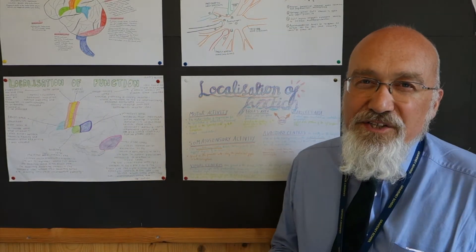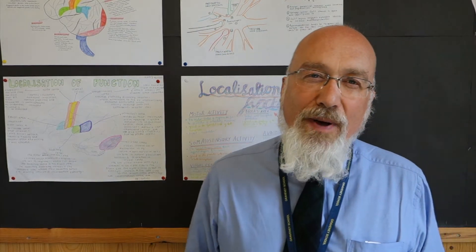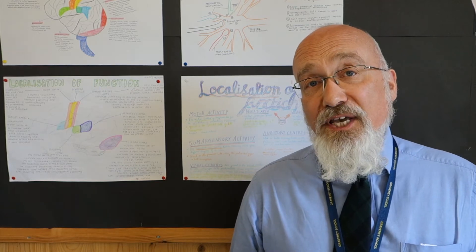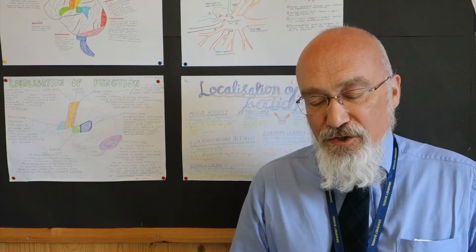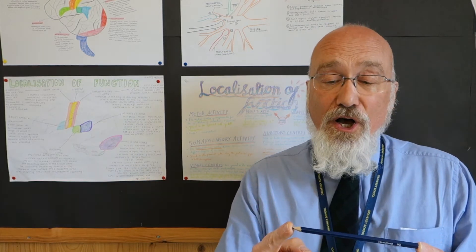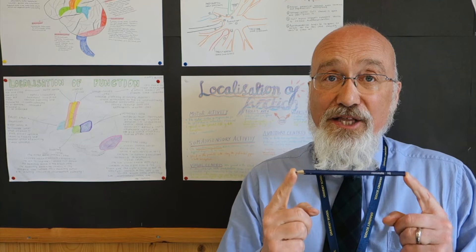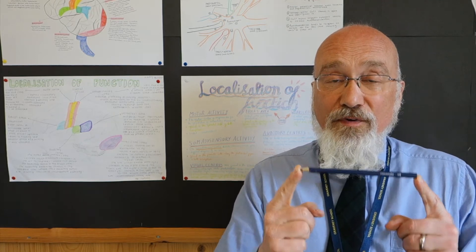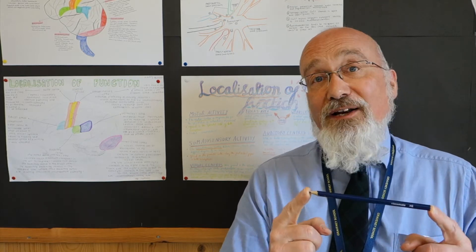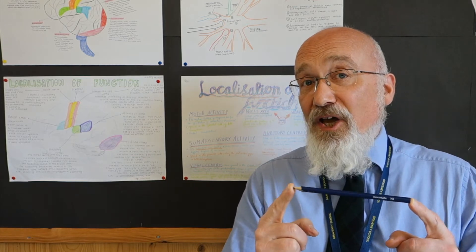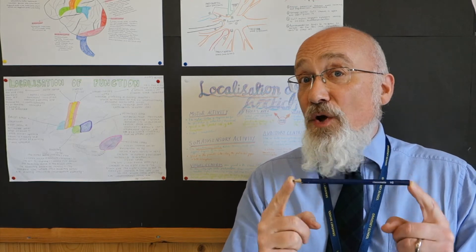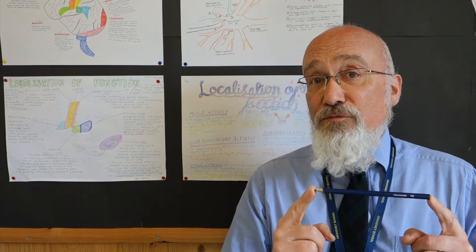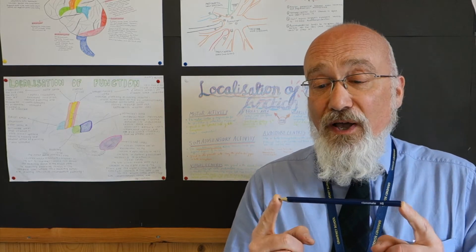There are two forms of reliability that we need to know about. The first one is inter-observer reliability. Supposing I get two observers to measure the length of a pencil — providing they've both got a decent ruler, they're going to arrive at pretty much the same outcome. That's because there's no room for opinion in measuring the length of a pencil; there's no room for subjectivity or bias.